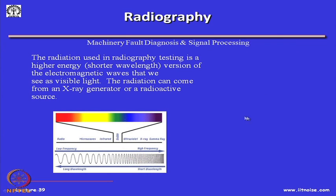Looking at the electromagnetic spectrum, the visible range is in the middle, below that is infrared, microwaves, and radio waves which have higher wavelengths. Above visible light we have UV rays, then x-rays, and then gamma rays. Gamma rays have the shortest wavelength and are most powerful; x-rays are a little less powerful than gamma rays. The speed of all these waves is the same as the speed of electromagnetic waves: 3×10⁸ meters per second.